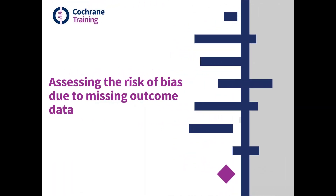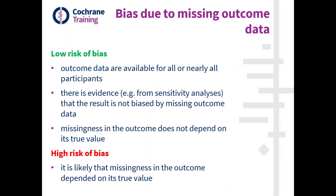Let's bring all this together into how we've articulated or operationalized all of this in the tool. Hopefully what has become clear throughout all our talking is that the situations in which we're at low risk of bias are relatively straightforward to articulate. Either we have no missing data or a really trivial amount of missing data, in which case there can be no bias due to missing data because there is no problem of missing data.